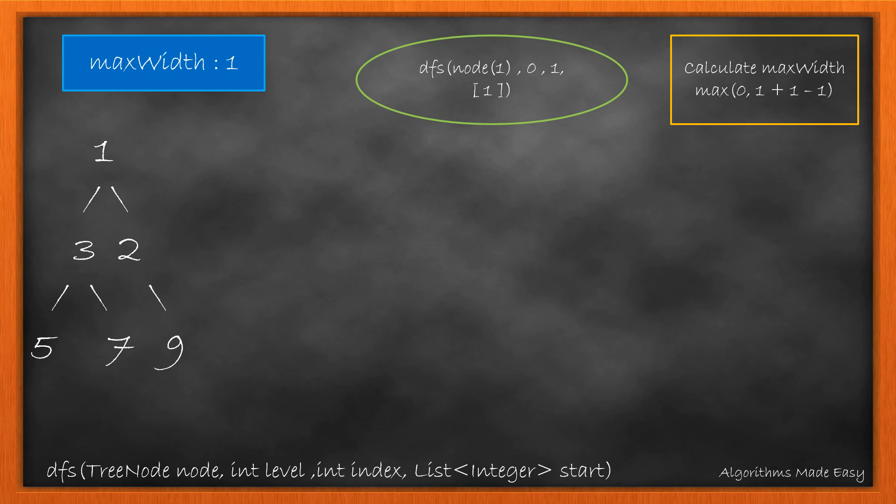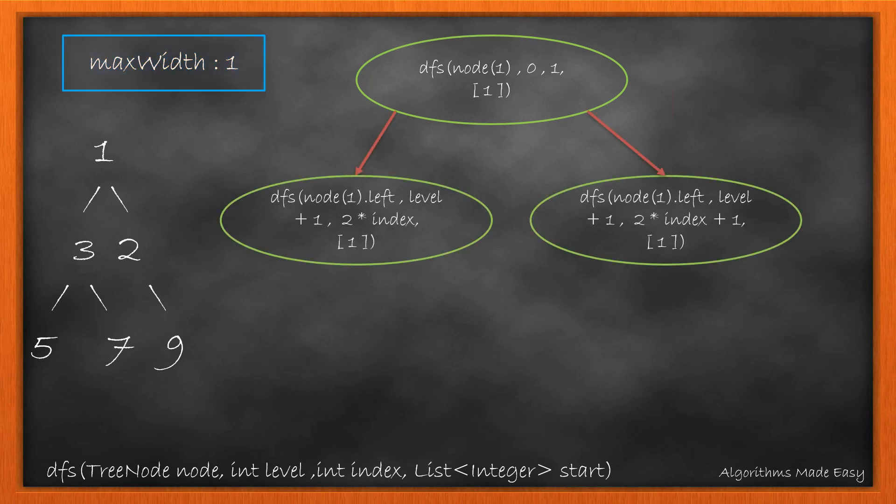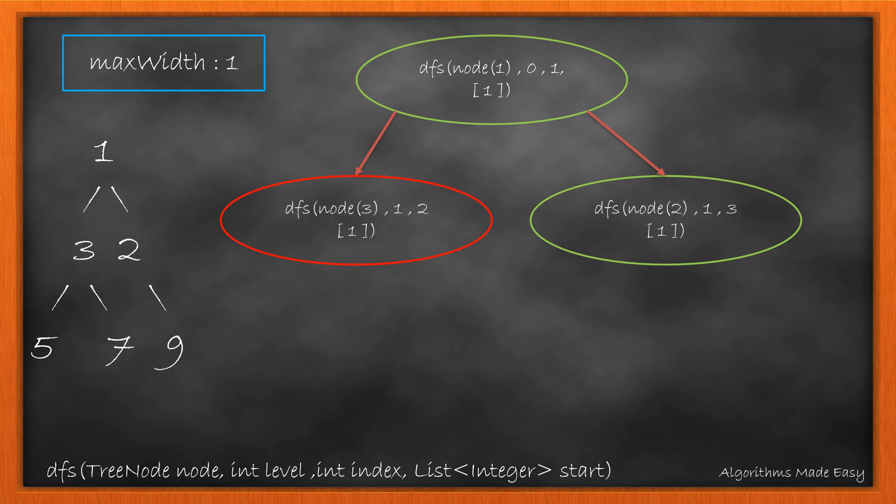After calculations, the max width now gets updated to 1. Now we will call DFS on left and right of node with the updated index and level. The level now becomes level plus 1 and the index updates to 2 multiplied by index. This formula is same as we saw in BFS. For the right node, the index becomes 2 multiplied by index plus 1. We will perform the calculations for our left node. As the level is same as the size of start list, we add the index in list and calculate the max width again.